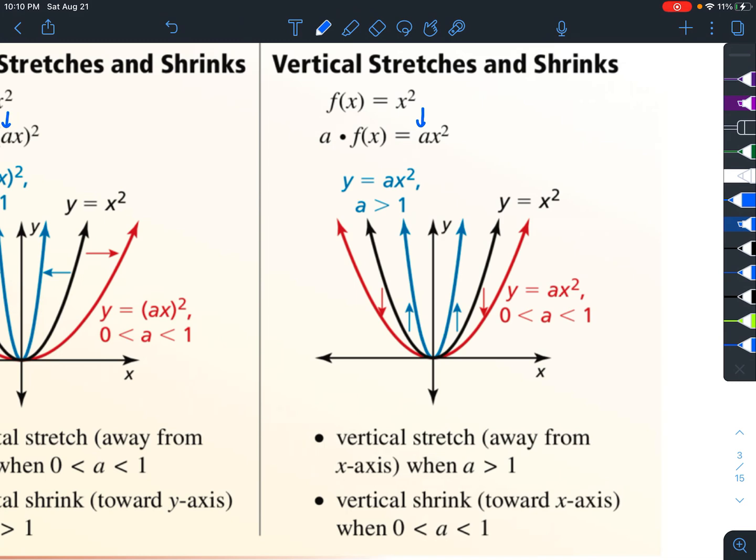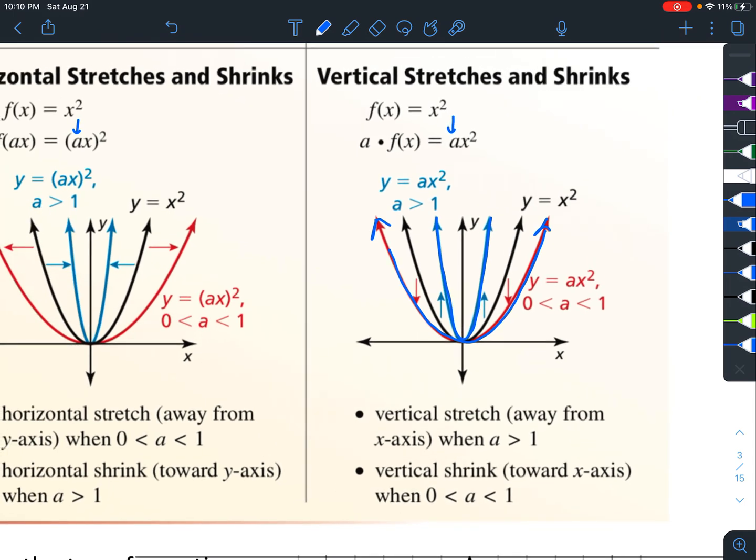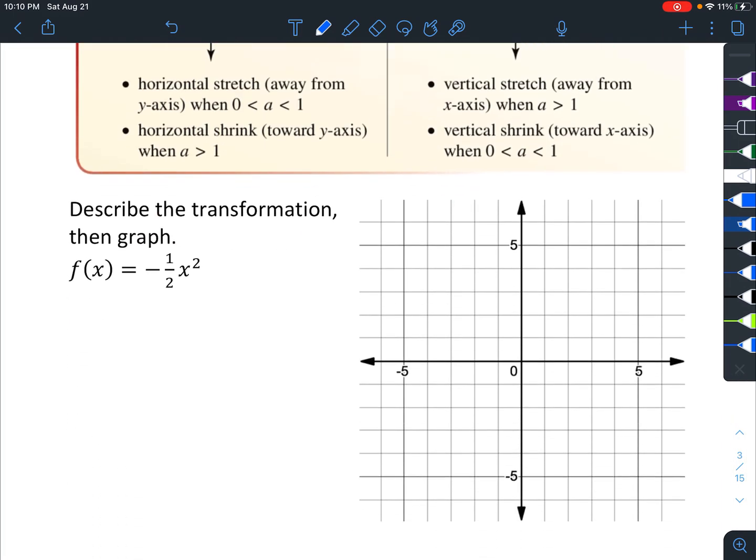So whatever number is in front of the x², if it's greater than 1, it's actually going to look thinner. And if it's less than 1 but bigger than 0, then it's going to look fatter. It's a vertical stretch and a vertical shrink.